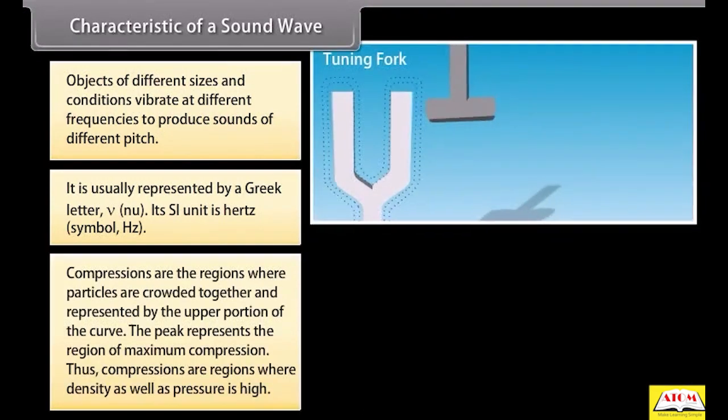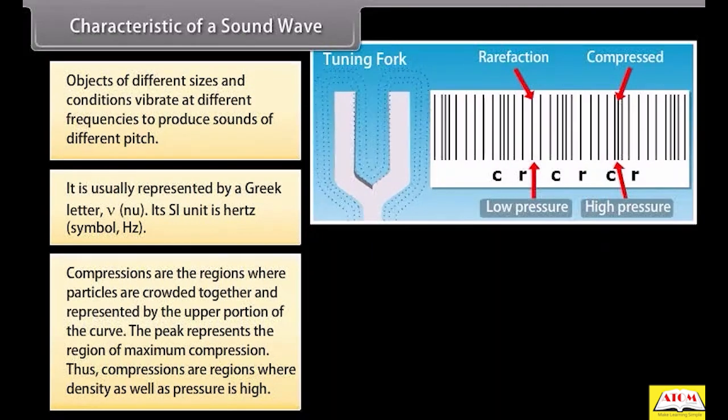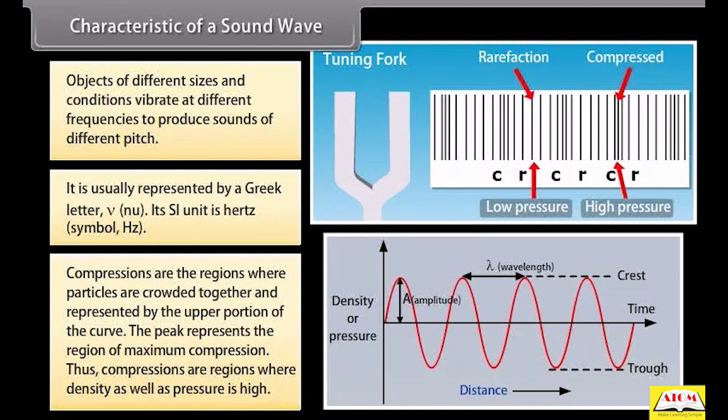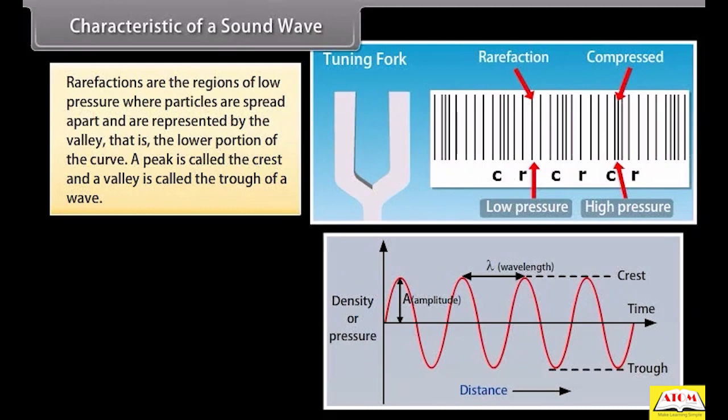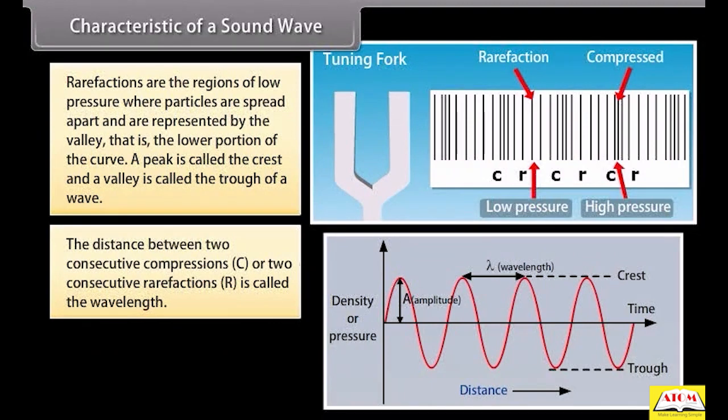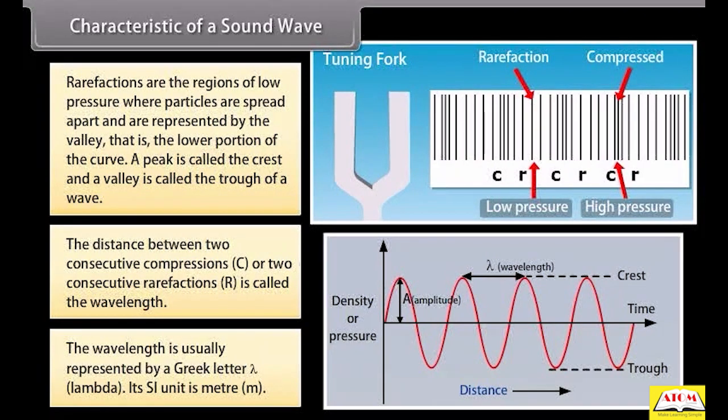We know that compressions are the regions where particles are crowded together and represented by the upper portion of the curve. The peak represents the region of maximum compression. Thus, compressions are regions where density as well as pressure is high. Rarefactions are the regions of low pressure where particles are spread apart and are represented by the valley, that is the lower portion of the curve. A peak is called the crest and a valley is called the trough of a wave. The distance between two consecutive compressions or two consecutive rarefactions is called the wavelength. The wavelength is usually represented by a Greek letter lambda. Its SI unit is meter.